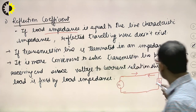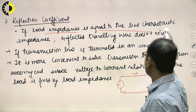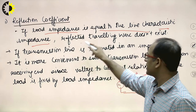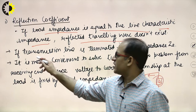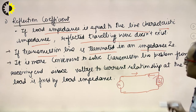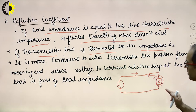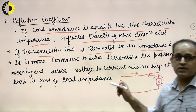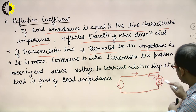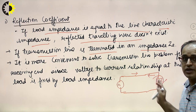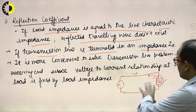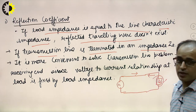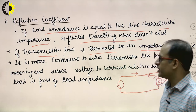If the load impedance is equal to the line impedance, the reflected wave will not exist. If the transmission line is terminated in a load impedance ZL, then ZL must be equal to the characteristic impedance Z0 of the line so that reflected voltage or reflected current will not be there.